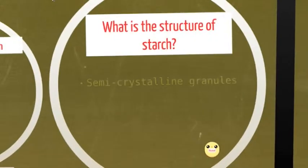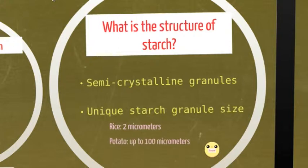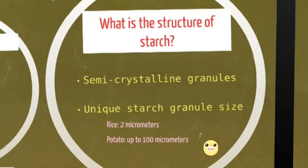Okay, then what is the structure of starch? Starch molecules arrange themselves in the plant in semi-crystalline granules. Each plant species has a unique starch granule size. Rice starch is relatively small, about 2 micrometers, while potato starches have larger granules, up to 100 micrometers.